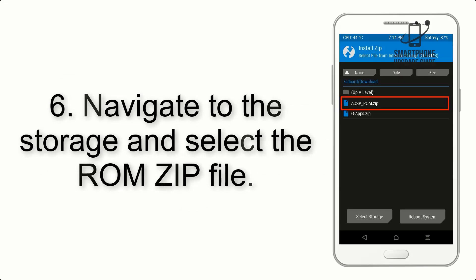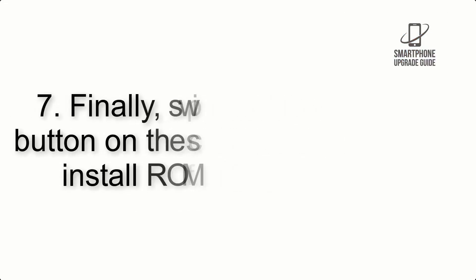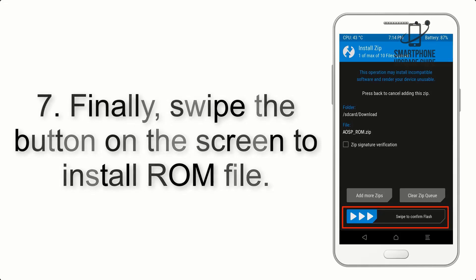Step 6. Navigate to the Storage and select the ROM ZIP file. Step 7. Finally, swipe the button on the screen to install the ROM file.